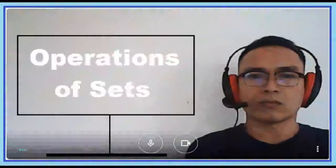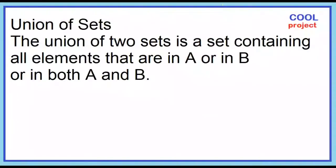Operations of Sets. Union of Sets: The union of two sets is a set containing all elements that are in A, or in B, or in both A and B.